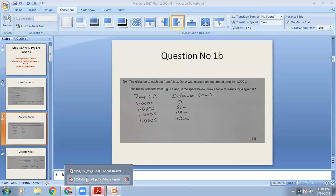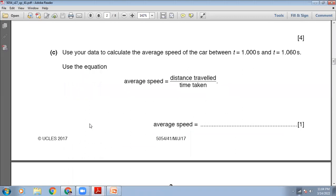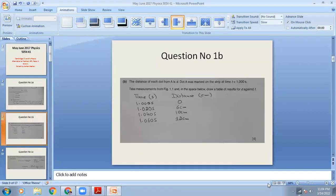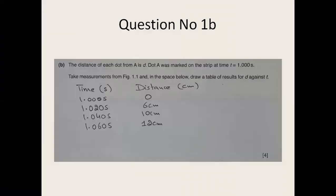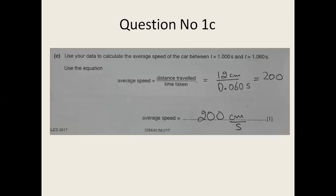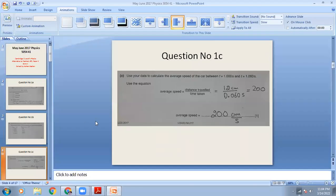The next question says: use your data to calculate the average speed of the car between T = 1 second and T = 1.06 seconds. Average speed equals total distance divided by total time. The total time is 0.06 seconds and the total distance traveled is 12 centimeters. So the average speed will be 12 centimeters divided by 0.060 seconds, giving 200 centimeters per second. That is the average speed, and that concludes question number one.